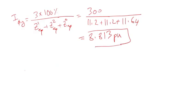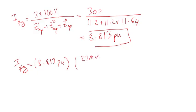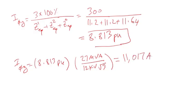To convert that to amps: 8.813 per unit times the base MVA of 27 MVA, divided by 12 kV times the square root of 3, because it's a low-side line-to-ground fault. This works out to 11,017 amps, which is the same as 11.017 kA.